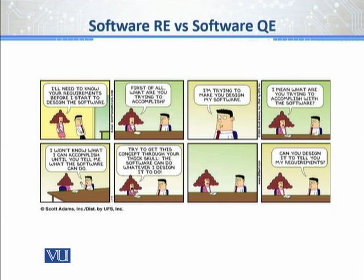Now the project manager asks: 'What are you trying to accomplish with the software?' Then look at the client's feedback: 'I won't know what I can accomplish until you tell me what the software can do.' That's the classic problem shown in this diagram — the client is saying how do you know what I want until you tell me what you can do?